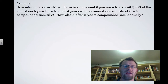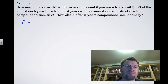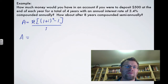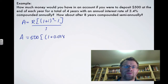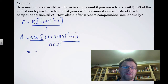Let's return to the first example: $500 deposited at the end of each year for four years at 3.4% compounded annually. Using our formula, A = R × [(1+i)^n − 1] / i, we plug in R = 500, i = 0.034, n = 4. Working from the inside out: 1.034⁴ − 1, multiplied by 500, divided by 0.034, gives exactly $2,104.33 — the same answer we got step by step.